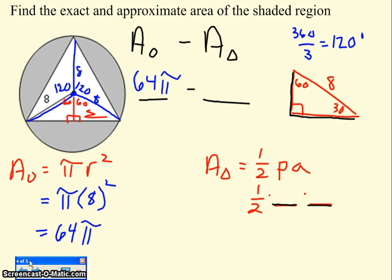In my 30, 60, 90, opposite the 30 is n, opposite the 60 is n√3, and opposite the 90 is 2n. Well, if 8 equals 2n, then n is going to equal 4.